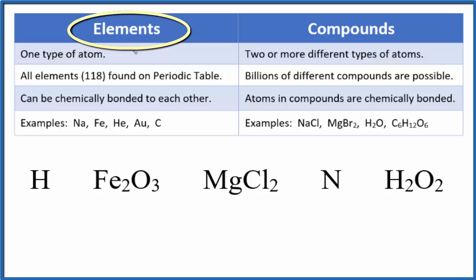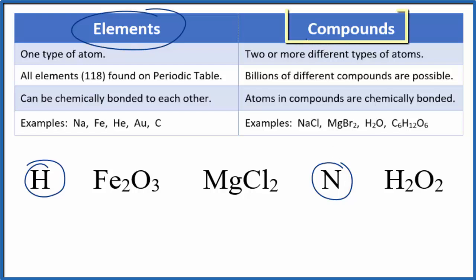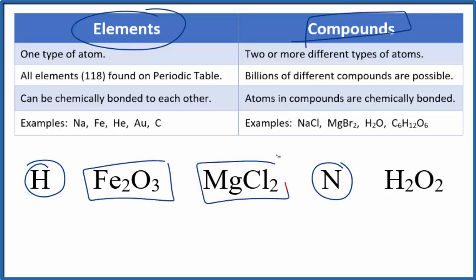We know that elements are made of one type of atom, so we have hydrogen here and nitrogen, these are elements. Compounds though, compounds are made of two or more different types of atoms, these are compounds and the elements are bonded together chemically to form the compounds. We find a list of all the elements on the periodic table, but since we can combine them in all kinds of different combinations, there are literally billions of different compounds possible.